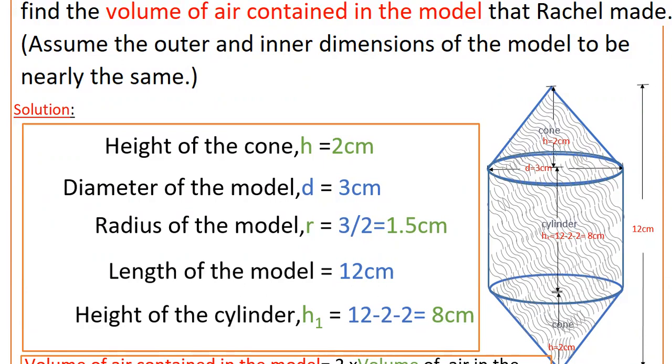Length of the model, total length of the model is 12 centimeters. Height of the cylinder: if you take this is a cylinder, total length is 12 centimeters, 12 minus this height is 2 and this height is 12 minus 2 minus 2, that is 8 centimeters. So cylinder's height is 8 centimeters.